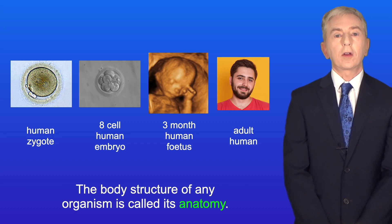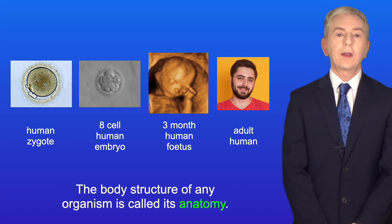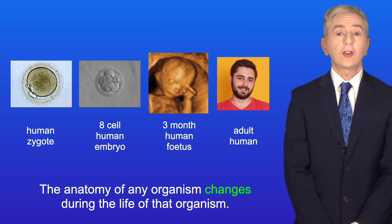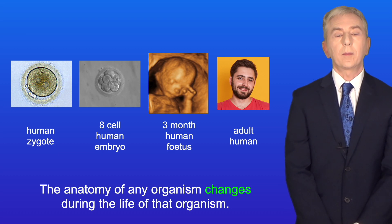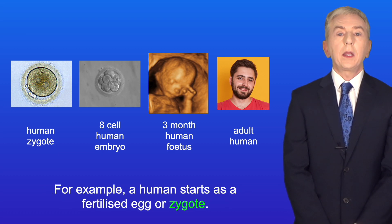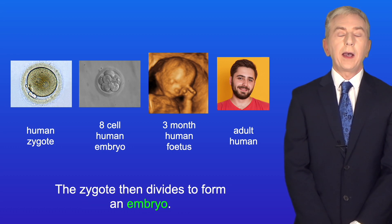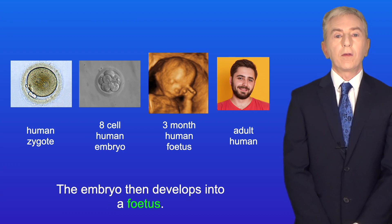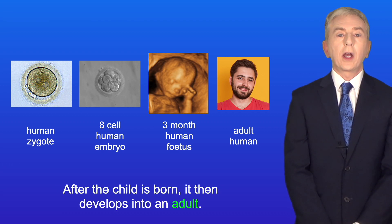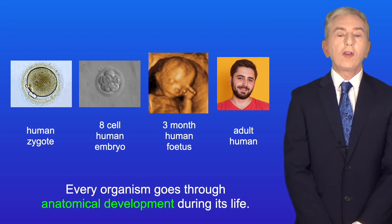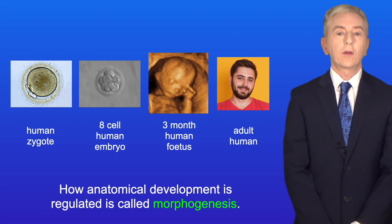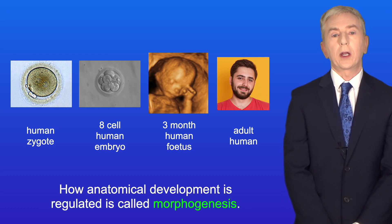The body structure of any organism is called its anatomy, and the anatomy of any organism changes during the life of that organism. For example, a human starts as a fertilized egg or zygote. The zygote then divides to form an embryo, and the embryo then develops into a fetus. After the child is born, it then develops into an adult. Every organism goes through anatomical development during its life, and how anatomical development is regulated is called morphogenesis.